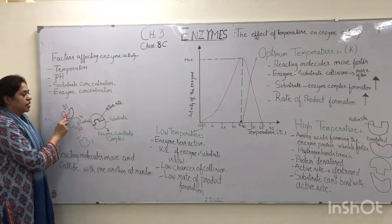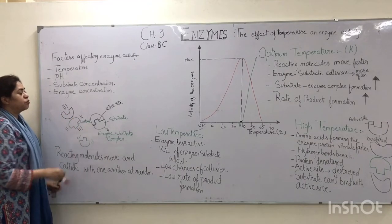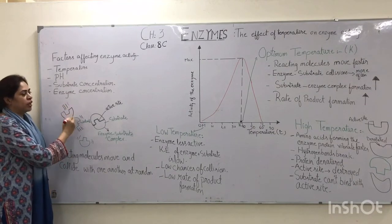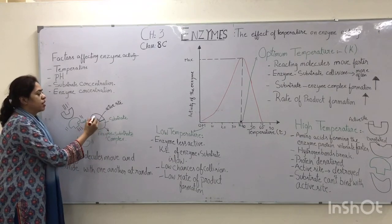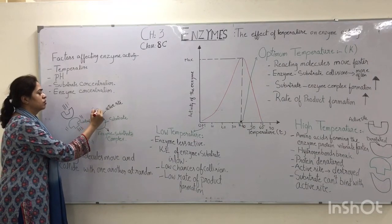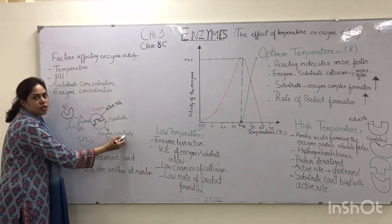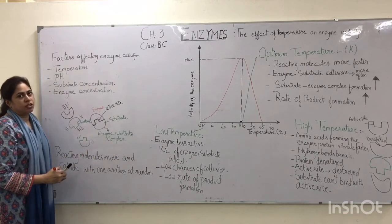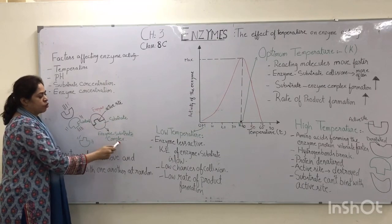We know from the previous topic that the enzyme molecules and the substrate molecules are in a state of constant motion. They constantly move around and collide with each other. As they collide, the substrate fits into the active site of the enzyme molecule and forms the enzyme-substrate complex. The rate of reaction depends upon the formation of these enzyme-substrate complex molecules.